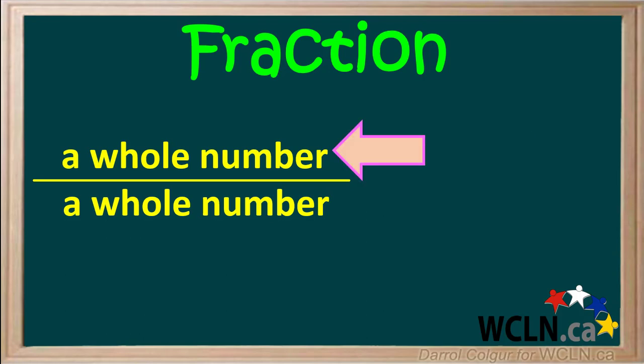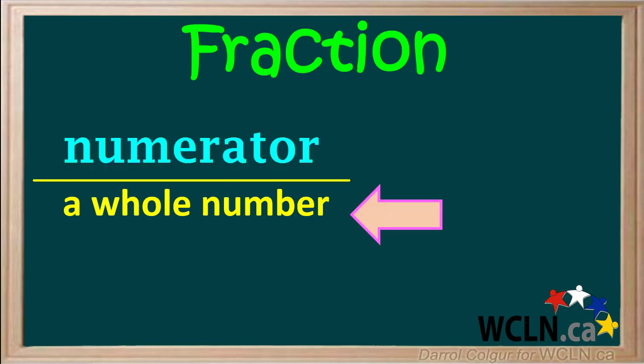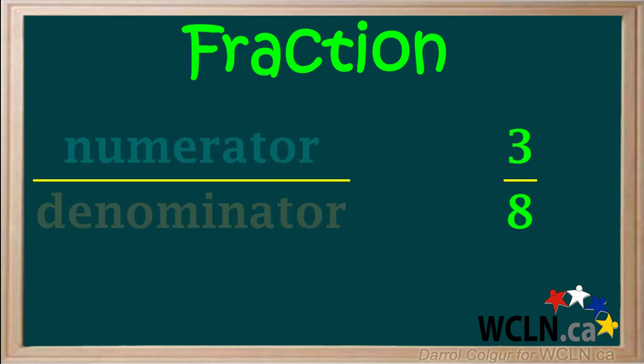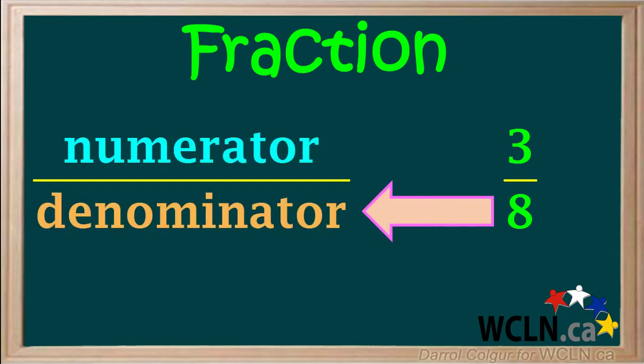The number on top of the line is called the numerator, and the number below the line is called the denominator. For example, for the fraction three over eight, three is the numerator and eight is the denominator.